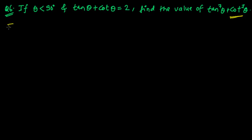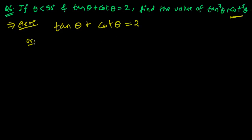So what is given here? tan theta plus cot theta equals 2. Now think: how can I find the value of tan⁷θ + cot⁷θ? The powers are 7 and 7 here, whereas we have 1 and 1. We need to change both terms into a single form — either change cot into tan or tan into cot. We know that tan theta equals 1 upon cot theta.